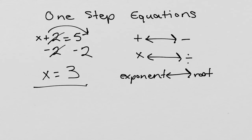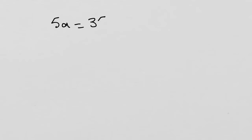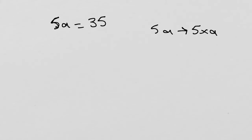Let's look at another example: 5a equals 35. Solve for a. Here again, we want to get rid of anything that is with the a. This means we have to get rid of the 5. So 5a is the same as 5 times a. Since the 5 is multiplying, we will perform the opposite operation on it. We know the opposite operation of multiplication is division, so we will divide both sides by 5. Since we performed the opposite operation, the 5 will cancel out. 35 divided by 5 is 7, so a equals 7.